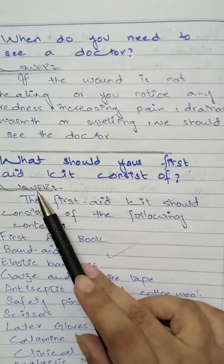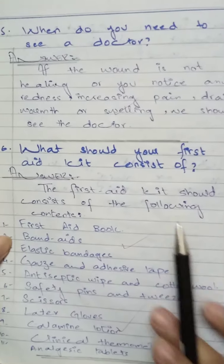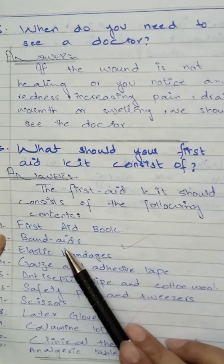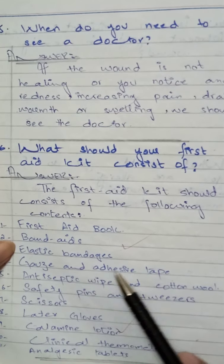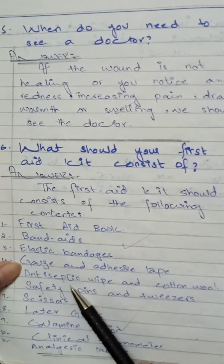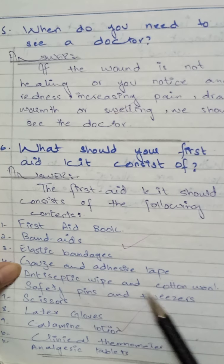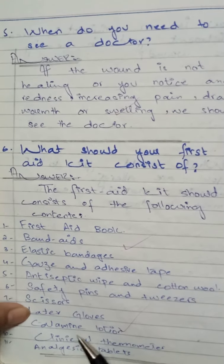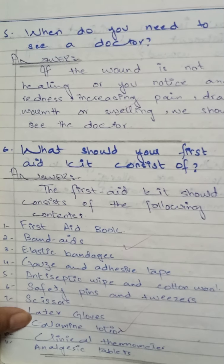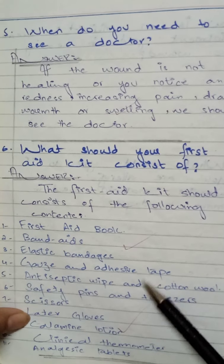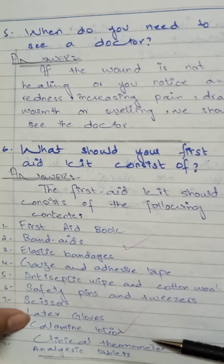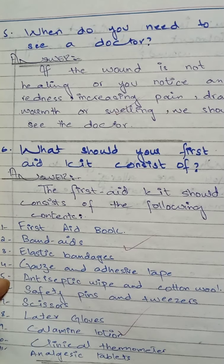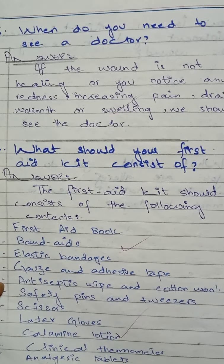Question number six: What should your first aid kit consist of? The first aid kit consists of: band-aids, elastic bandages, gauze and adhesive tape, antiseptic wipes, cotton wool, safety pins, tweezers, scissors, latex gloves, calamine lotion, clinical thermometer, and analgesic tablets. All six questions have to be done in your notebook. Writing the sentences is also your home task.